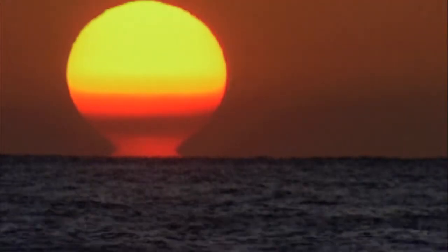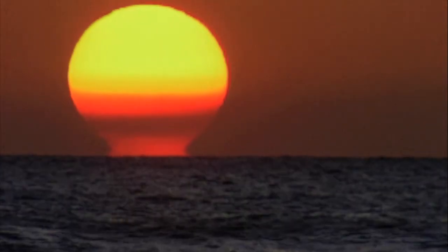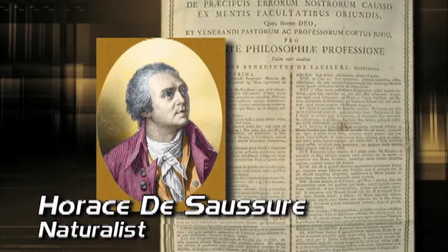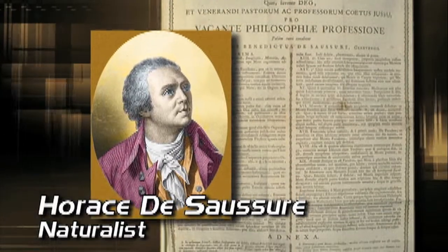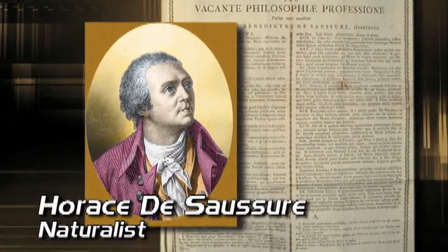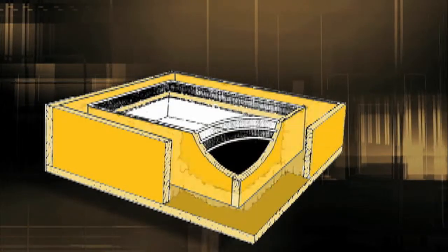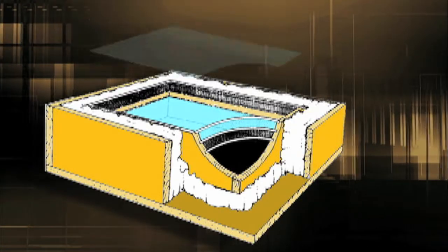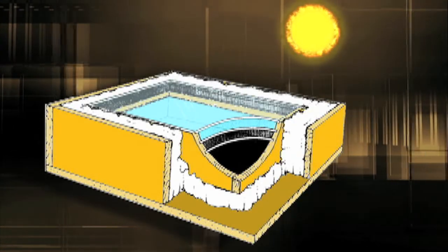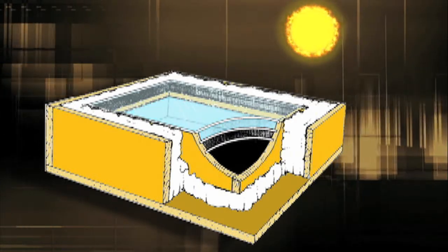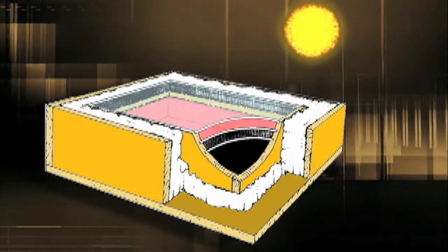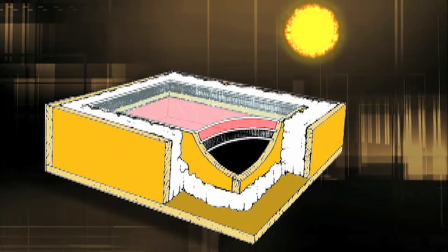The sun has been used to heat liquids for centuries, ever since a human first left water out in direct sunlight. But it was a Swiss naturalist named Horace de Saussure who designed the first working solar water heater back in the 1760s. Saussure built a shallow wooden box, insulated the inside, then trapped water there. When he covered the box with glass and left it in the sun, he discovered that the water inside heated up to 228 degrees Fahrenheit—16 degrees above the boiling point of water—without using a flame.